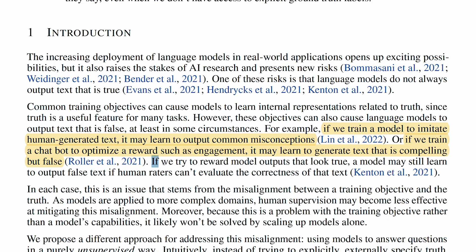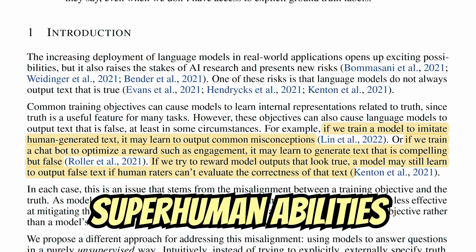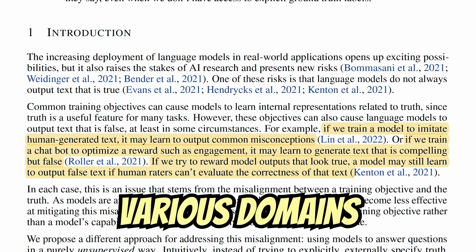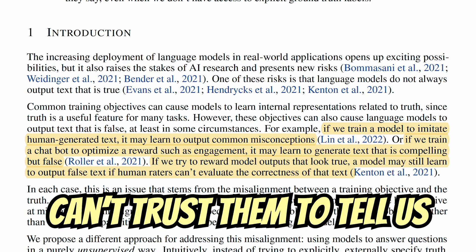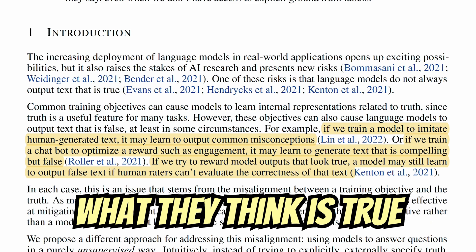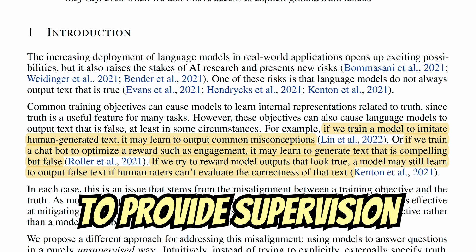And there's another problem. If we try to reward model outputs that look true, a model may still learn to output false text if human raters can't evaluate the correctness of that text. As AI models move towards superhuman abilities in various domains, it's a big problem if we can't trust them to tell us what they think is true once we are no longer able to provide supervision.